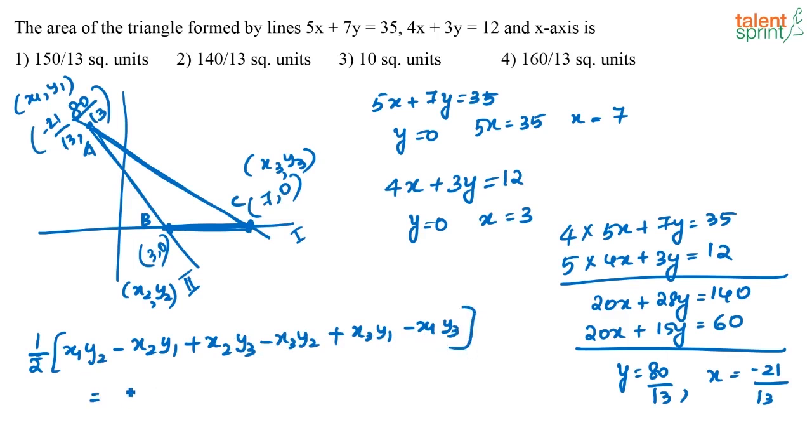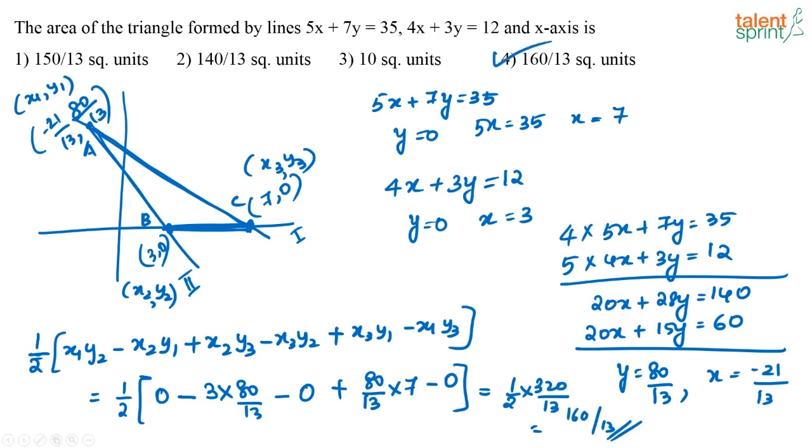Put in these values here. What will you get? You will get half of, see, y2 is 0, correct? So you will have half of 0 minus what is x2? x2 is nothing but 3, 3 into 80 by 13. Again, what is y2? y2 is 0 plus you have y1. What is y1? y1 is nothing but 80 by 13 into 7, y3 again 0. So you will get this as 1 by 2 into 320 by 13 or that is equal to 160 by 13. So which is the correct answer? Your correct answer is going to be option 4, 160 by 13.